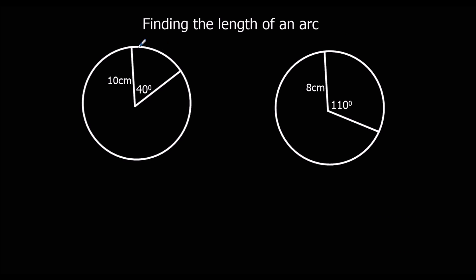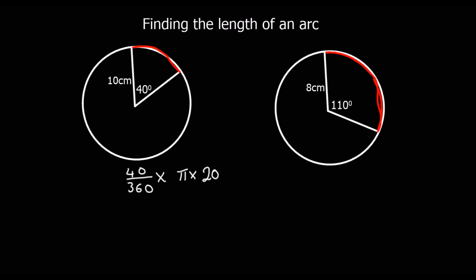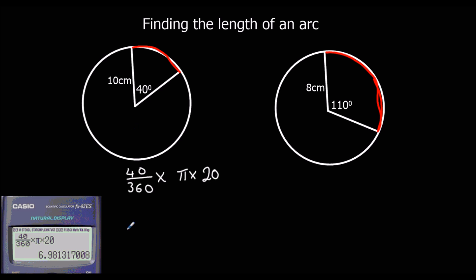Let's look at two examples. We're going to work out the length of the minor arcs. In this case, we've got 40 degrees, so that's 40 out of 360, times the whole circumference, which is pi times the diameter — 20 again. Type that into the calculator and to one decimal place, that's 7.0 centimetres.